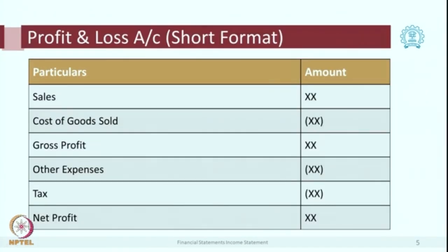Here is a simple format or short form of P&L account. It starts with sales — most entities' income is sales. Then less cost of goods sold gives you gross profit. Then you deduct other expenses or operating expenses and taxes — that is the net profit. This is a very simple format of P&L.